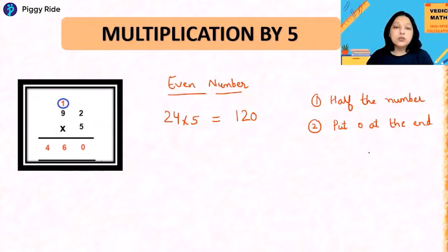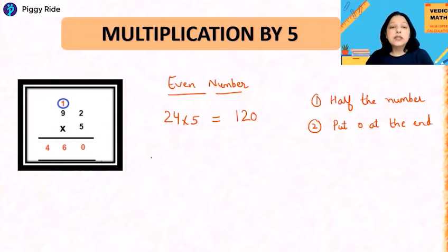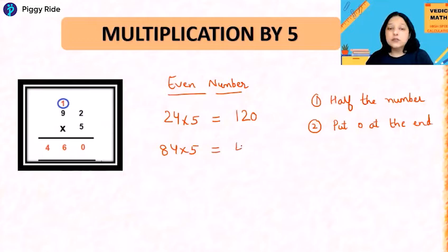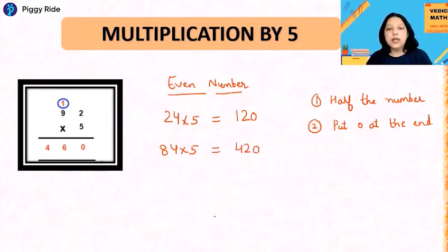With these two steps only, you will get your answer. Let's take another example: 84 times 5. Without doing the actual multiplication, you can quickly half 84 — half of 84 is 42 — put zero at the end, so the answer will be 420. Now I think the concept is clear for even numbers.